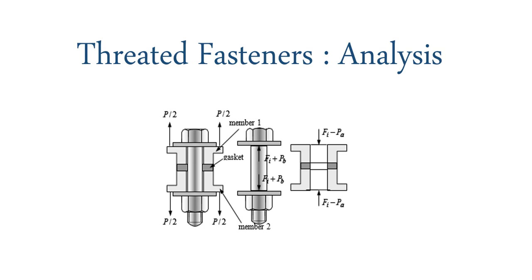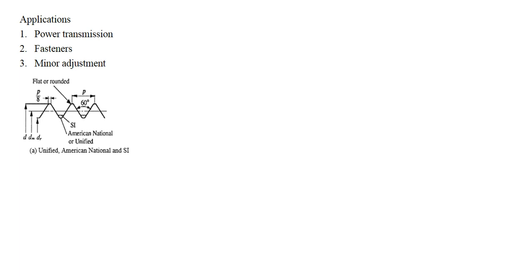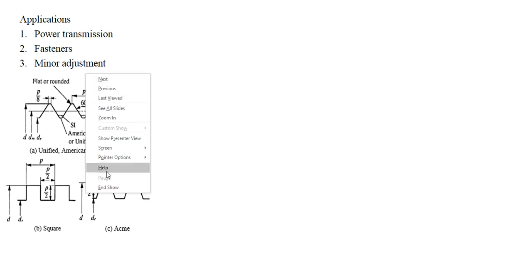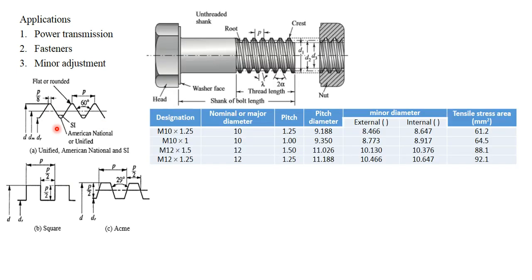We will be discussing the design of threaded fasteners in this video. The general applications are power transmission, fasteners, and minor adjustment. Power transmission includes lead screws and power screws. Fasteners connect two different members, and minor adjustment is used to level things. The threads generally used are unified American National, SI thread, square thread, and acme thread. Square thread and acme threads are used for power transmission, and V-thread is for general purpose use.